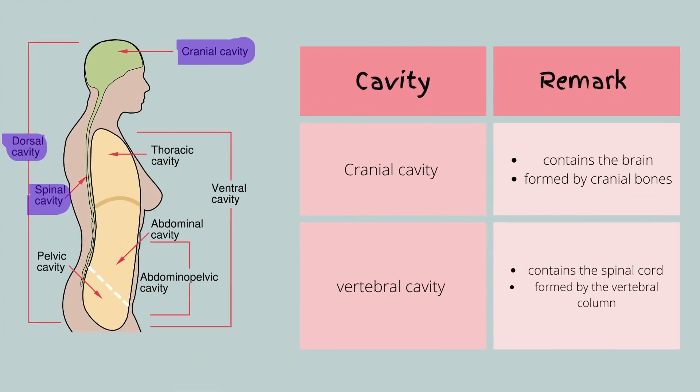We will start with the dorsal body cavities, which are the cranial cavity and the vertebral cavity. The cranial cavity houses the brain and is formed by cranial bones. The vertebral cavity, or the spinal cavity, houses the spinal cord and is formed by the vertebral column.